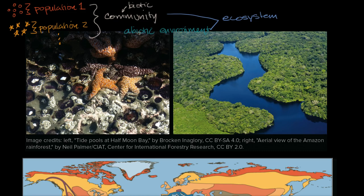In terms of the types of ecosystems, there's a lot of variety. This is a picture of a tide pool at Half Moon Bay, not too far from where I live — I've actually been to those tide pools. You could consider one particular tide pool — both the abiotic factors like the water and rock, as well as the biotic factors like the starfish and sea anemones — as an ecosystem. You might say the entire beach or entire region is an ecosystem; it depends on how much you want to zoom in or zoom out.